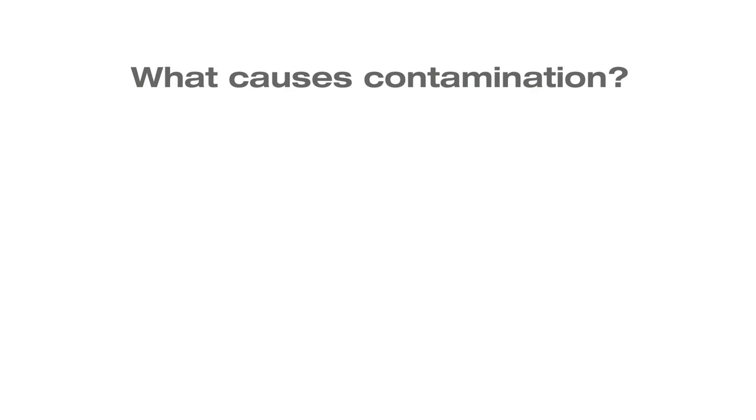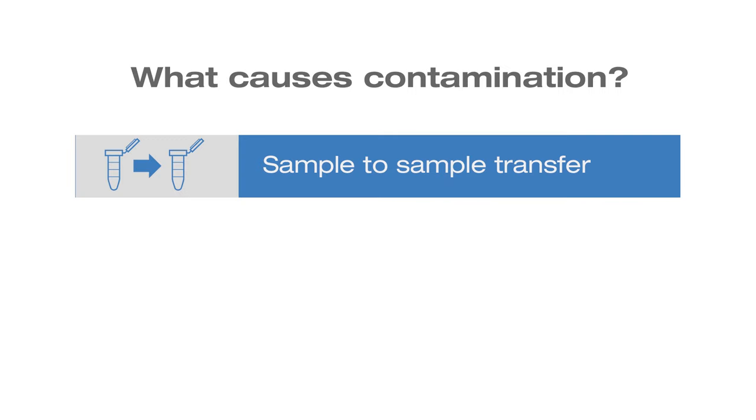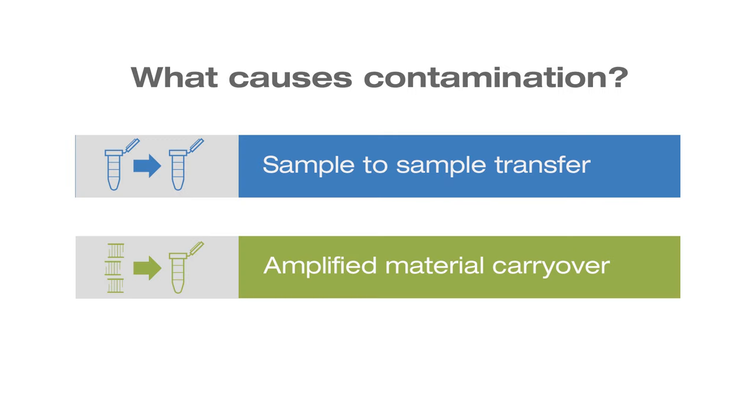Contamination can arise from simply transferring a small amount of one sample into another, or it can be traced to previously amplified material making its way into the next batch of samples to be amplified. In either case, contamination can have a major impact on the project data.